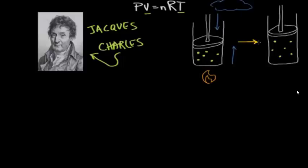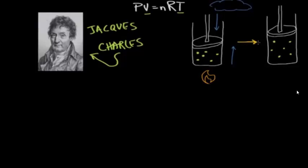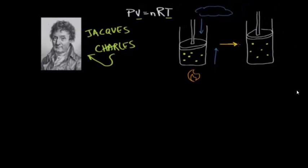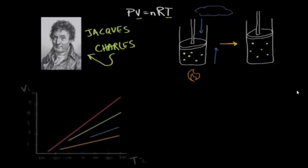And in fact, the volume increases directly with the temperature, or the volume increases proportionally to the increase in temperature. And I think I can show this a little bit more clearly if I use a plot of gases increasing with temperature. And so this is what a plot of volume expansion would look like for four different gases as we're increasing the temperature.